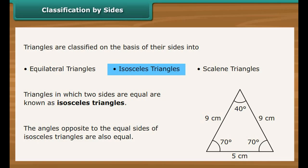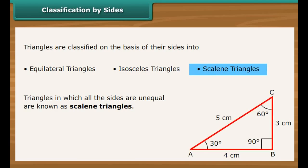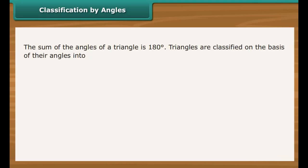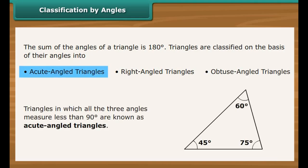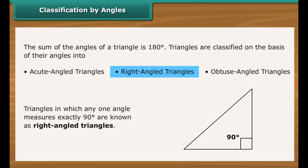Classification by angles: The sum of angles of a triangle is 180 degrees. Triangles are classified as: acute angled triangles — all three angles measure less than 90 degrees; right angled triangles — any one angle measures exactly 90 degrees; obtuse angled triangles — any one angle measures more than 90 degrees.